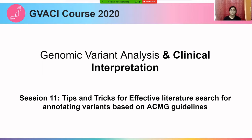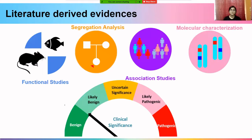Today, we are going to learn about a few tips and tricks for effective literature search based on ACMG guidelines. The literature-based evidences we are looking for include functional studies, where the clinical consequence of the variant can be interpreted by incorporating the variant in cell lines or model organisms. We are also interested in case reports which show the segregation of the variant in normal individuals and symptomatic members of the family.